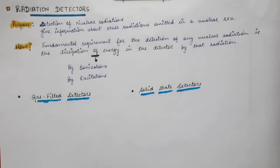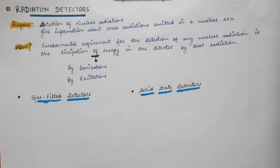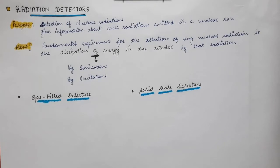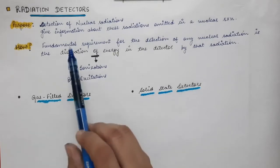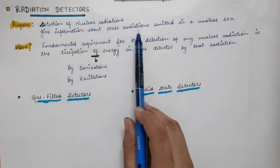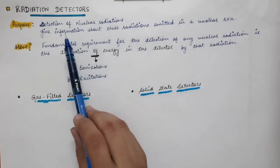In this lecture we are going to start the next chapter of nuclear and particle physics: radiation detectors, or particle detectors. As their name suggests, these are instruments which help us in detecting nuclear radiations such as alpha particles, beta particles, deuterons, or gamma radiations — examples of nuclear radiations emitted in a nuclear reaction. The radiation detectors help us in detecting these particles and also provide information about them.